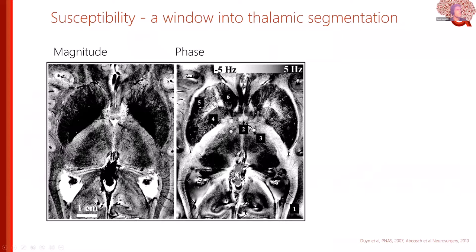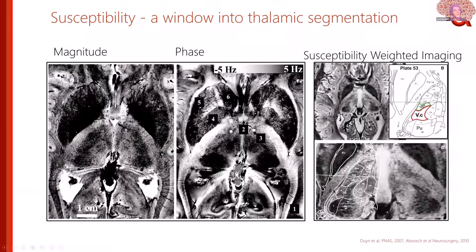What got people excited from the start was work showing that you can have very strong contrast in the middle of the brain both in the magnitude and the phase images. Shortly after, it was also shown that you can use susceptibility-weighted imaging to visualize these structures.